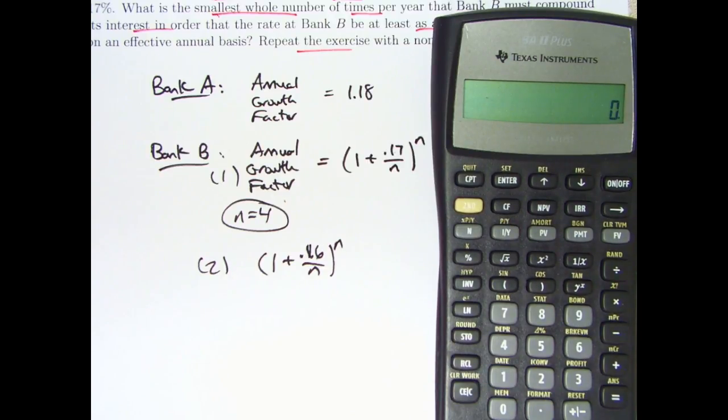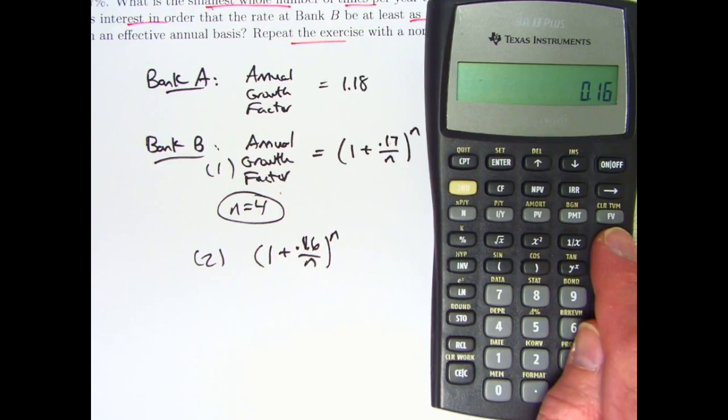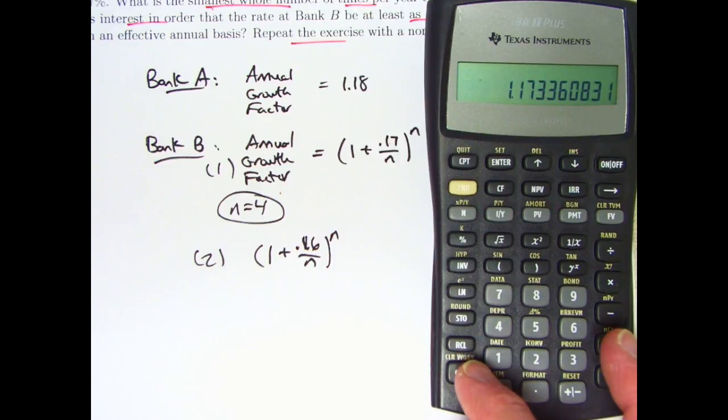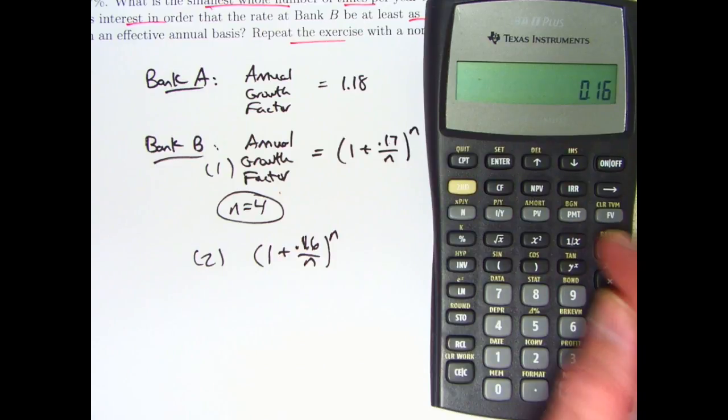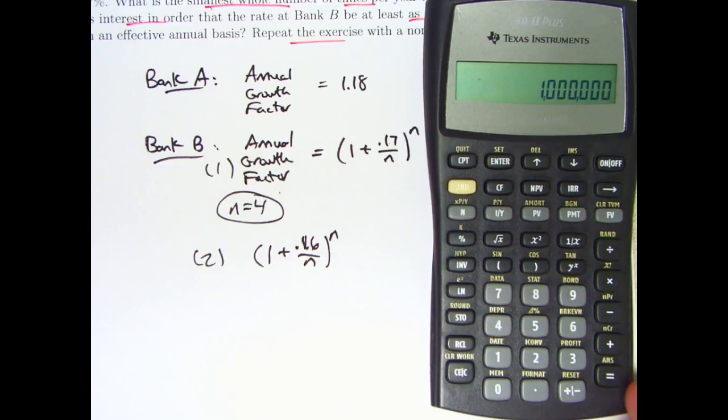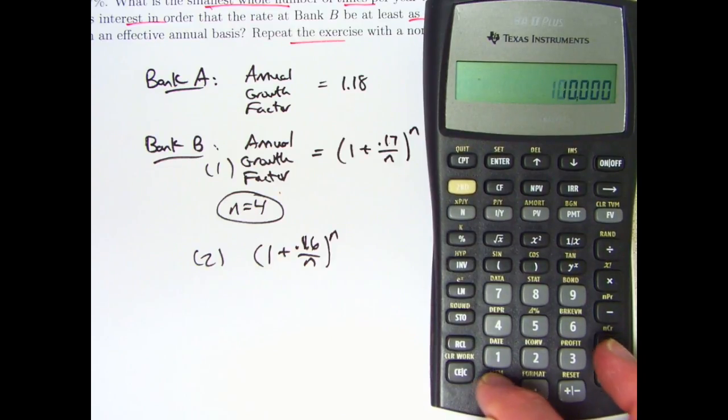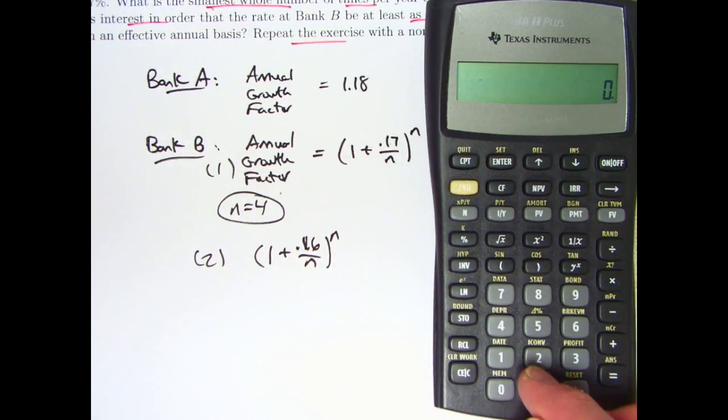You might start to get frustrated and try, well, what about N equals 100? 0.16 divided by 100. Add 1, raised to the 100 power. It's still not bigger than 1.18. So, then you try N equals 1,000, N equals 10,000, maybe even N equals 1 million. Let's see if the calculator can even handle N equals 1 million. 0.16 divided by 1 million. Raised to the million power. Did I type something wrong?